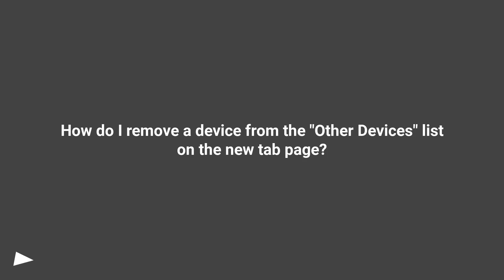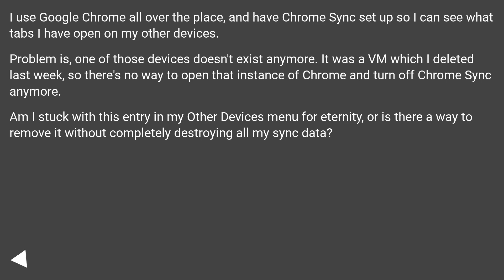How do I remove a device from the other devices list on the new tab page? I use Google Chrome all over the place, and have Chrome Sync set up so I can see what tabs I have open on my other devices. Problem is, one of those devices doesn't exist anymore. It was a VM which I deleted last week, so there's no way to open that instance of Chrome and turn off Chrome Sync anymore.